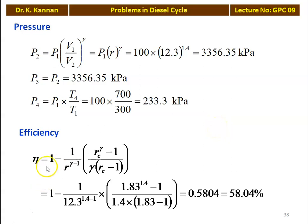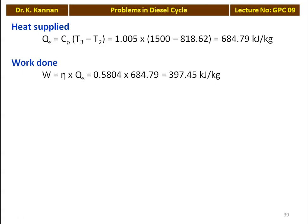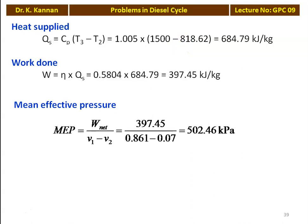We calculate the efficiency of the Diesel cycle: eta equals 1 minus (1 by R to the power gamma minus 1) into (Rc to the power gamma minus 1) divided by (gamma into Rc minus 1). Substituting: 1 minus (1 by 12.3 to the power 0.4) into (1.83 to the power 1.4 minus 1) divided by (1.4 into 0.83) equals 0.5804, which is 58.04%. Heat supplied equals Cp into (T3 minus T2): 1.005 into (1500 minus 818.62) equals 684.79 kilojoules per kilogram. Work done equals 0.5804 into 684.79 equals 397.45 kilojoules per kilogram. MEP equals 397.45 divided by (0.861 minus 0.07) equals 502.46 kilo Pascal.